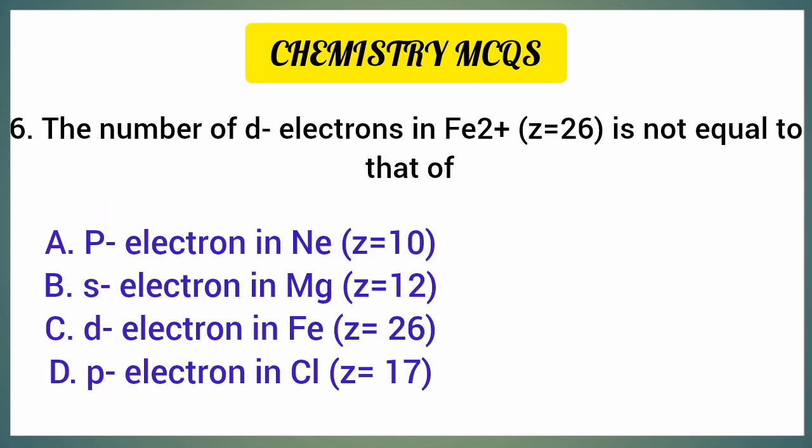The number of D electrons in Fe²⁺ (where Z = 26) is not equal to that of — correct option is option D — P electrons in chlorine (where Z = 17).